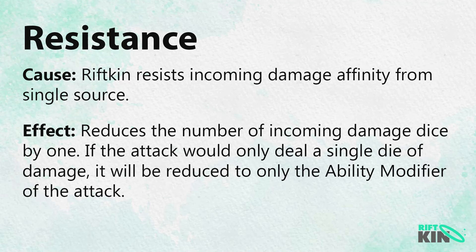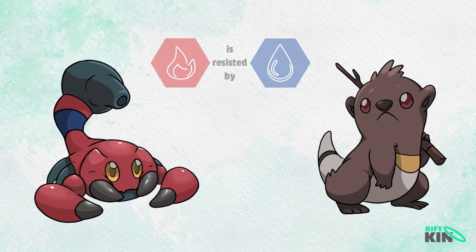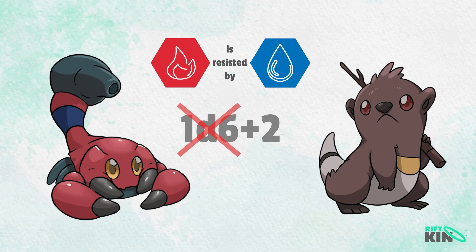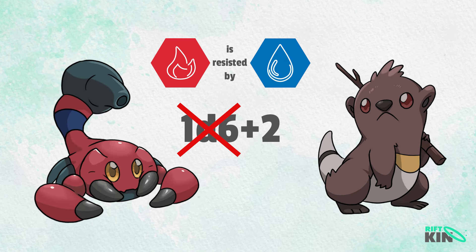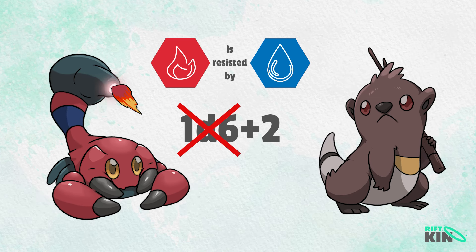Resistance! Resistance reduces the number of incoming damage dice by 1. But if the attack would only deal a single die of damage, it will be reduced to only the ability modifier of the attack. For example, a pinch blaze attacking an aquatter will have its damage dice reduced by 1. So if the attack would deal 1d6 plus 2 damage, it will instead only deal 2 damage to the aquatter.